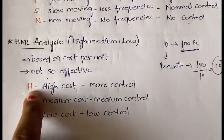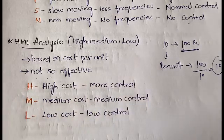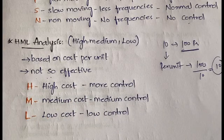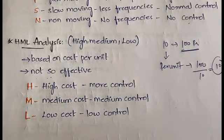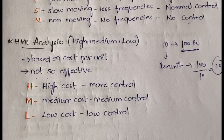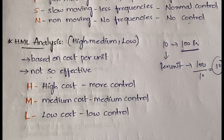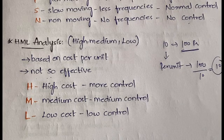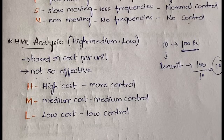In HML analysis, H is high cost per unit, M is medium cost per unit, and L is low cost per unit. High cost items should be given more control, medium cost items should get medium control, and low cost items should get low control. Control is assigned based on the cost per unit of the raw material.